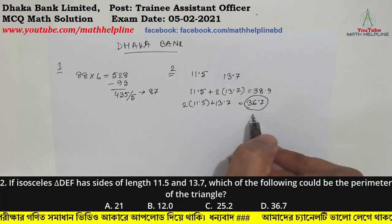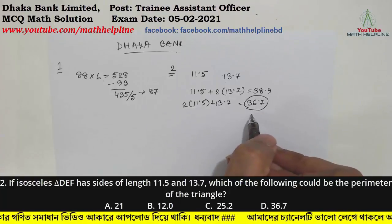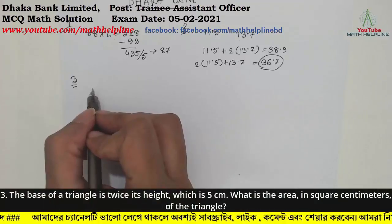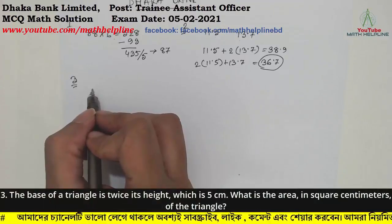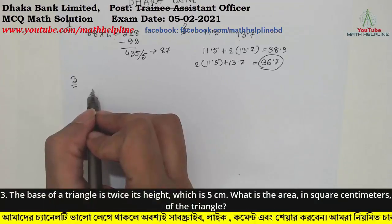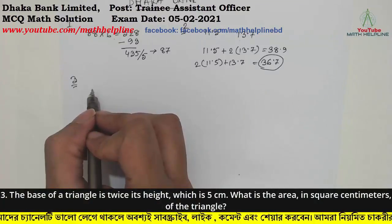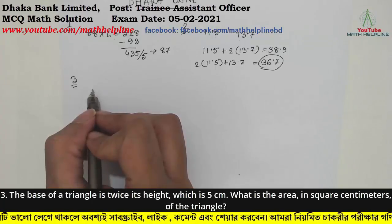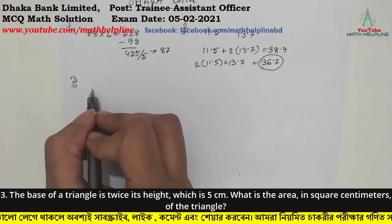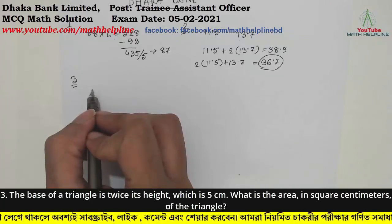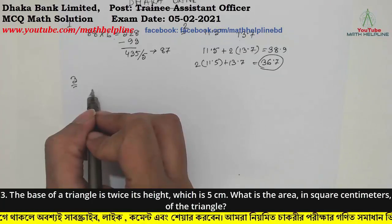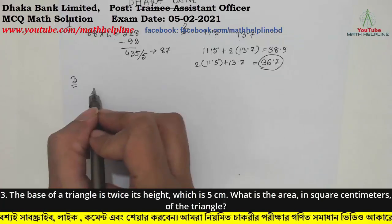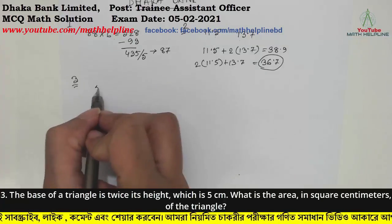Number 3: The base of a triangle is twice its height, which is 5 cm. What is the area in square cm of the triangle? The height is 5 cm and the base is double the height, so the base is 10 cm.